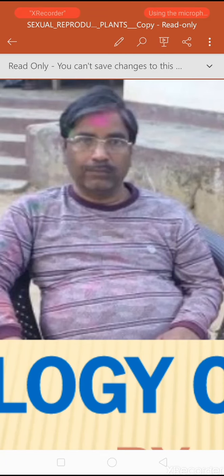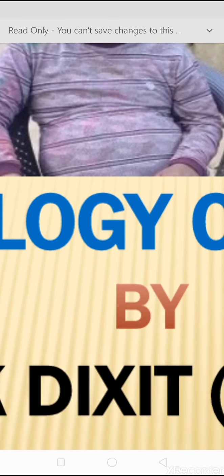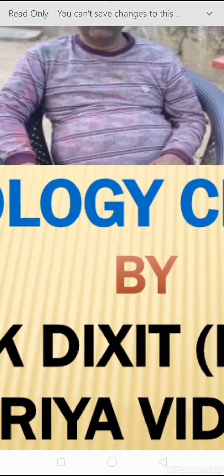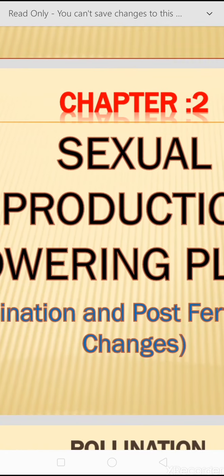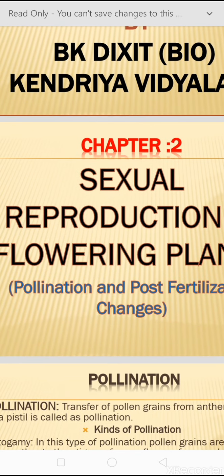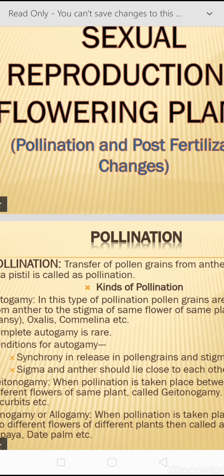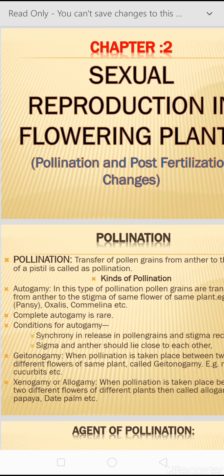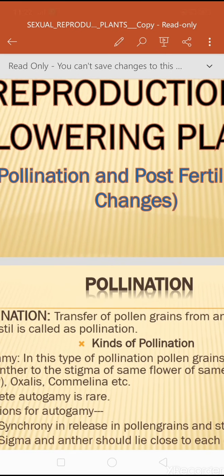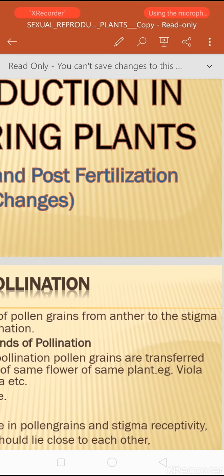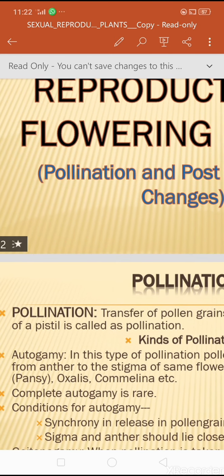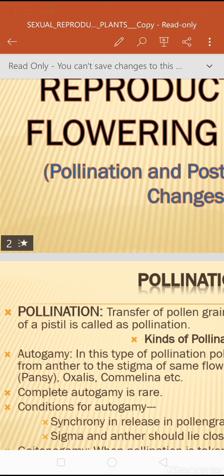Welcome to biology class. Today we will discuss sexual reproduction in flowering plants, the second part, that is pollination and post-fertilization changes. Pollination is the process of transfer of pollen grains from the anther to the stigma of the pistil.